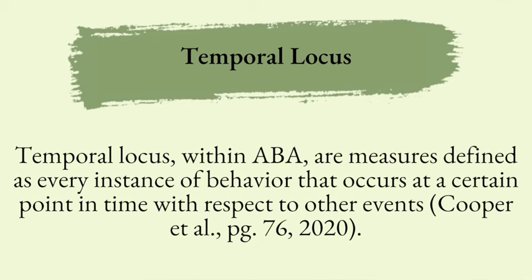The next dimension we want to discuss is temporal locus. Within ABA, this refers to measures defined by every instance that a behavior occurs at a certain point in time with respect to other events. We separate this into two kinds of behaviors: those that occur with respect to other events, and those where we're interested in the amount of time between two responses of the same behavior.